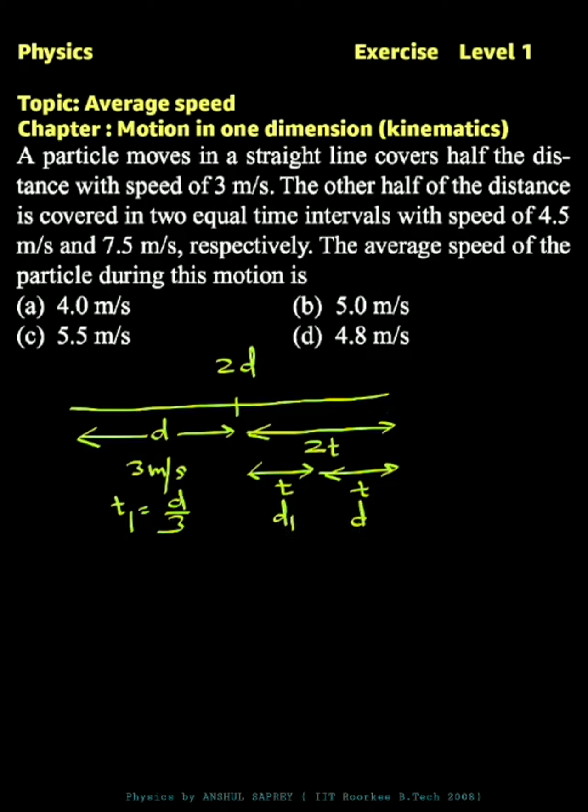d1 and the distance covered in the second half time is d2. So we can say d1 by t is equal to 4.5, which is the average speed during the first half time. And similarly, d2 by t is equal to 7.5, which is the average speed during the second half time.